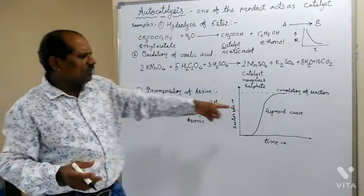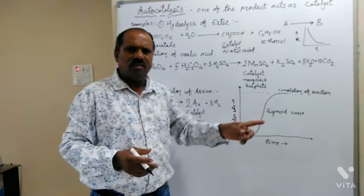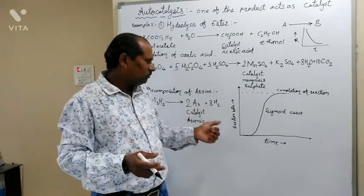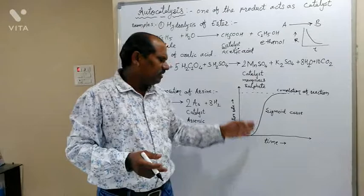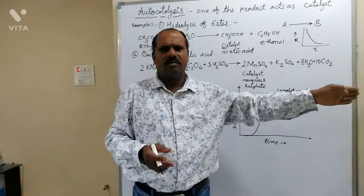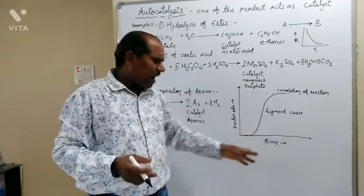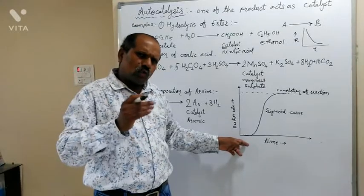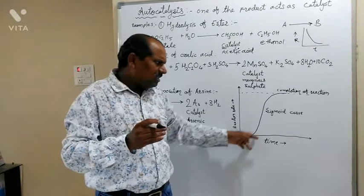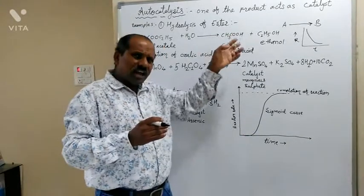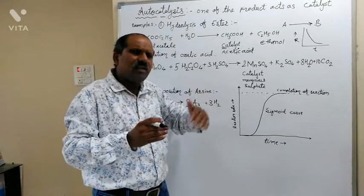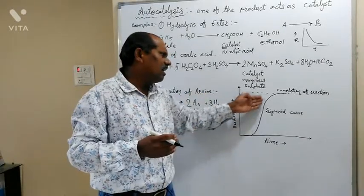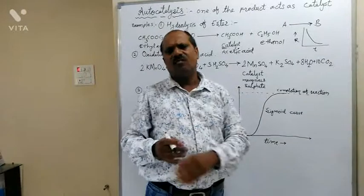This leads to the formation of a sigmoid curve. When you plot the curve between reaction rate and time, a sigmoid curve is formed, which indicates that at the initial point the rate of reaction is slow. As one of the products acting as a catalyst is formed, the rate of reaction starts to increase and goes on steadily increasing up to the completion of reaction.